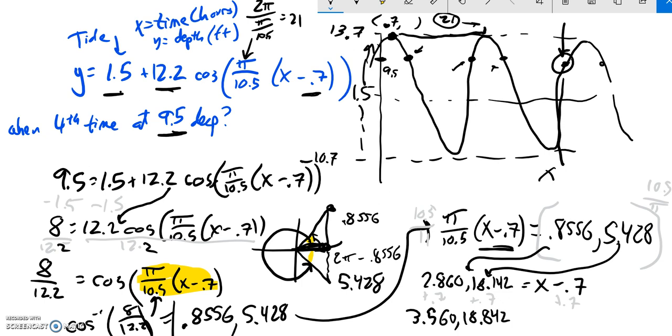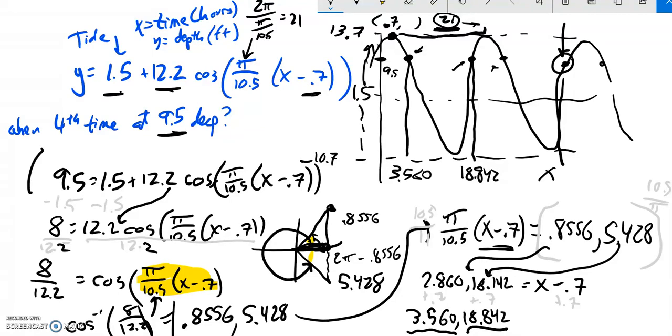Now, what I found here, this 3.56, that's this first point right here. And this 18.842, that's the x value for this point right here. And remember, there's a period of 21 here.